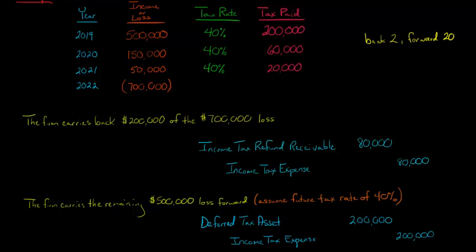The remaining $500,000, because we have $200,000 here that we carried back of that $700,000, but $700,000 minus $200,000 is $500,000. We get to carry that forward to offset future taxable income. We're going to debit deferred tax asset for $200,000. That $200,000, why not $500,000? Because we're multiplying by the tax rate, and we're going to assume the future tax rate will be 40%. So 40% of $500,000 in losses is really going to have a benefit of $200,000. Then we're going to credit income tax expense for $200,000.